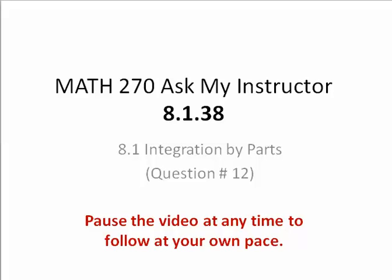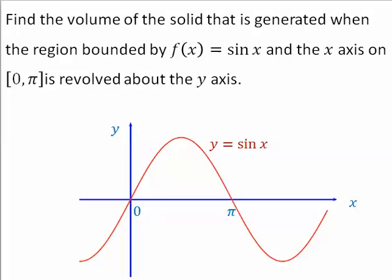Ask my instructor 8.1.38. Find the volume of the solid that is generated when the region bounded by f(x) = sin(x) and the x-axis on [0, π] is revolved about the y-axis.